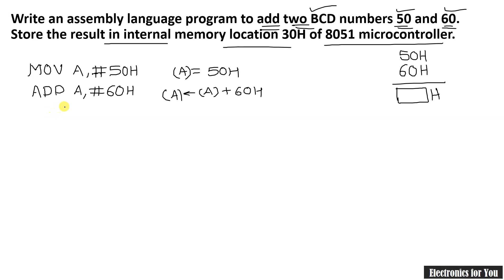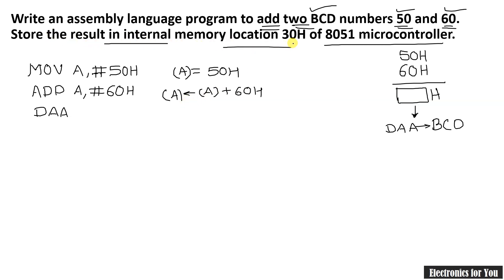The result in the accumulator is in hexadecimal, so we have to convert it to BCD. The instruction that converts the number into BCD is DAA — Decimal Adjust Accumulator. This instruction must be used after the addition instruction, and it will automatically convert the result into a BCD result.